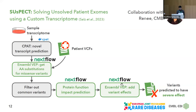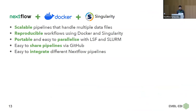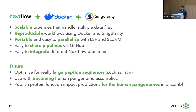From there, we can add again with VEP variant effects, and the final output is variants that are predicted to have a severe effect. Thanks to Nextflow, we could create these scalable pipelines that handle multiple data files. The built-in support for containers allows for reproducible workflows. It's portable, easy to parallelize with LSF and SLURM, easy to share pipelines via GitHub, everything is open source, and easy to integrate with different Nextflow pipelines. In the future, we also want to improve some processes for really large peptide sequences, such as titin, which is an enormous protein. We also intend to publish protein function impact predictions for all human pangenomes in Ensembl, free to use for everyone.